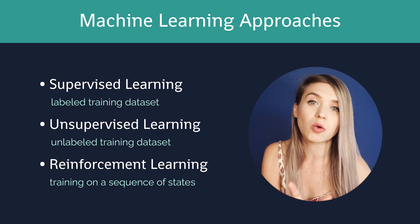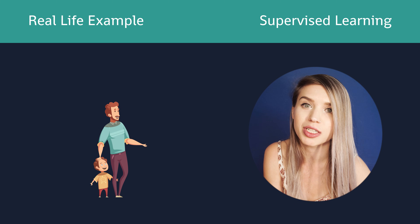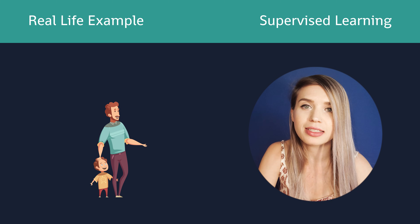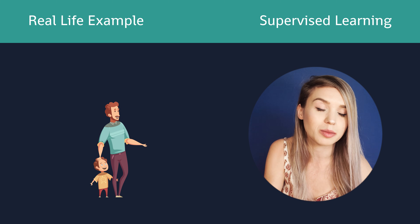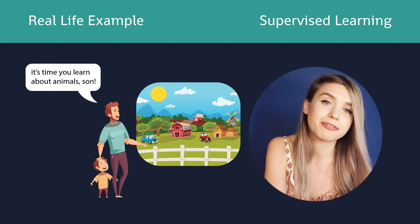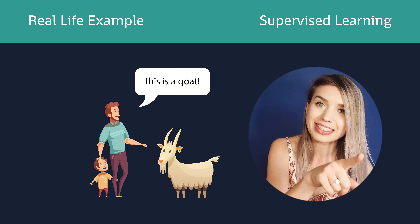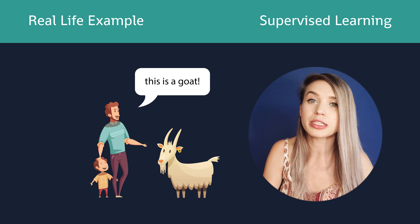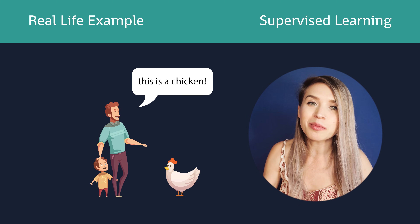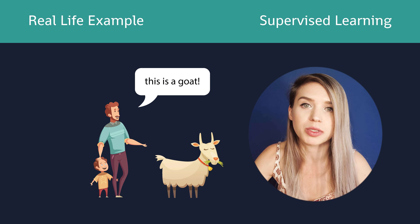The first approach is called supervised learning, and it's the real-life equivalent of a parent and child relationship where the parent teaches his kid everything about the world. So let's say the parent wants to teach his child about animals for the very first time. He would take his kid to a farm, point at a goat and say this is a goat, then point at a chicken and say this is a chicken. The more examples of goats and chickens his child is exposed to, the better the chance he'll remember the difference between them.